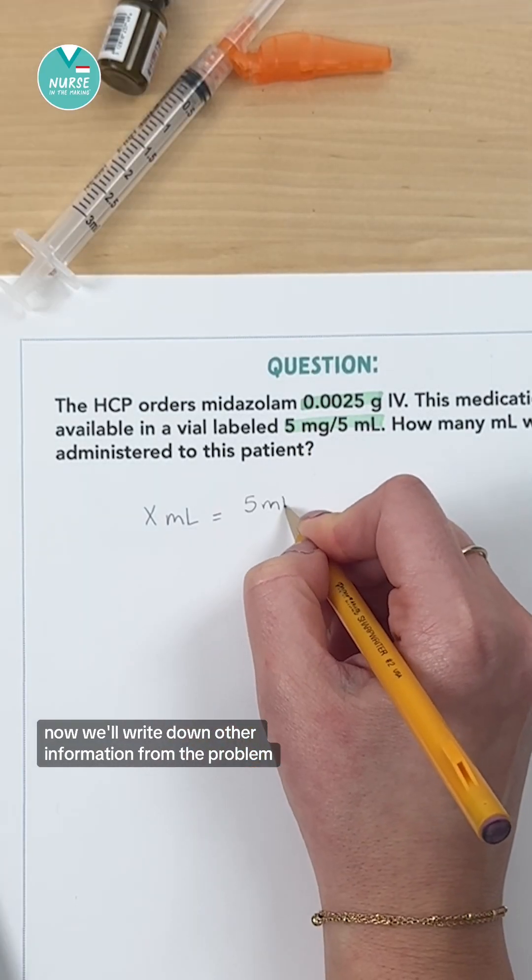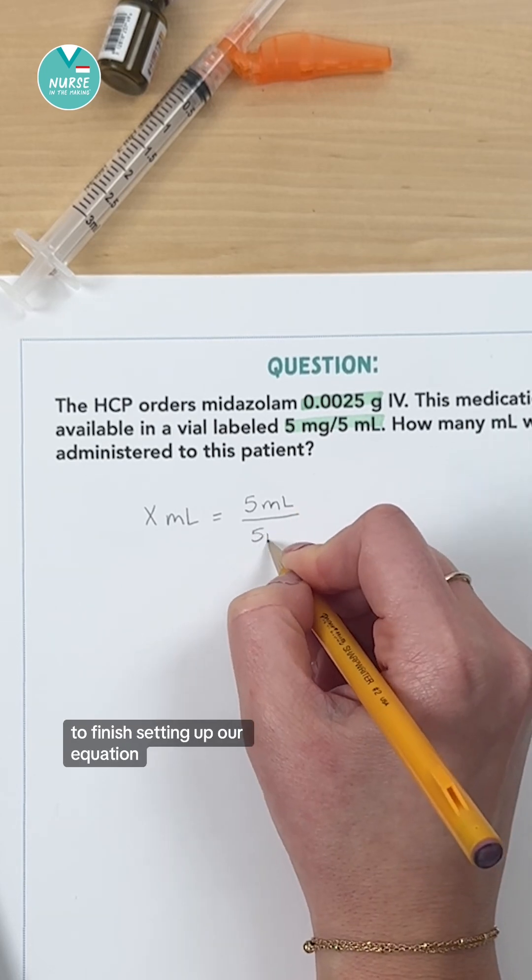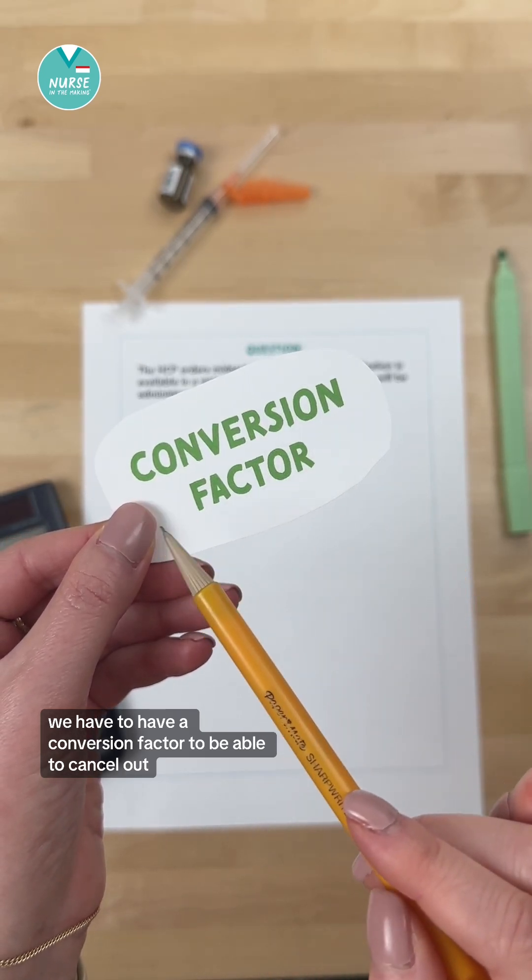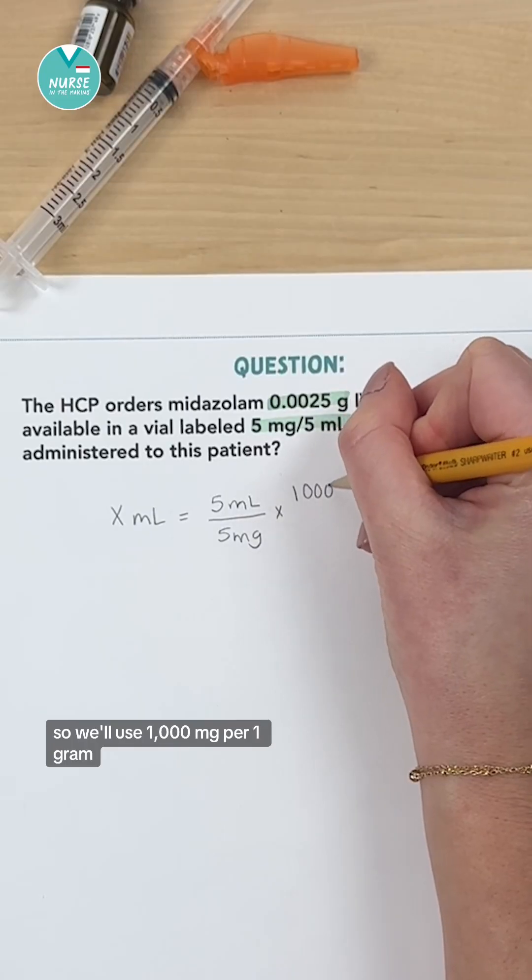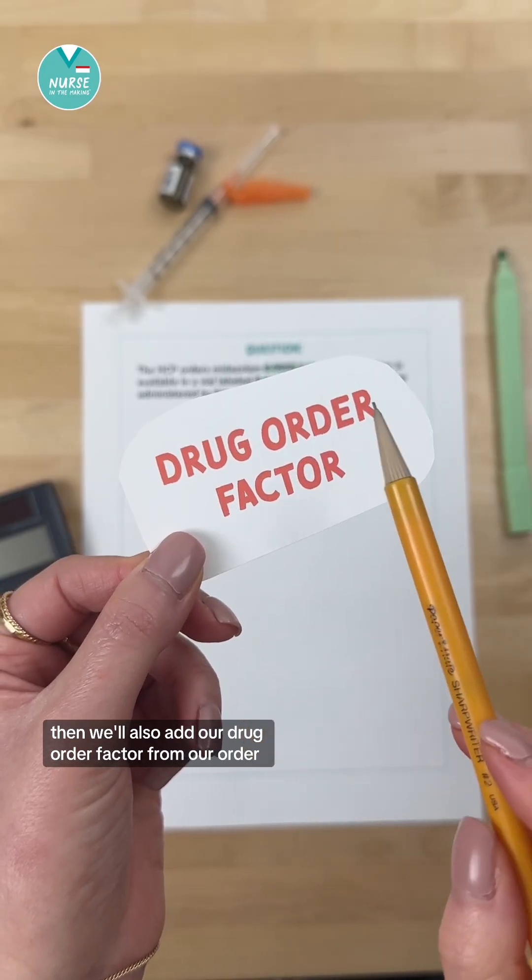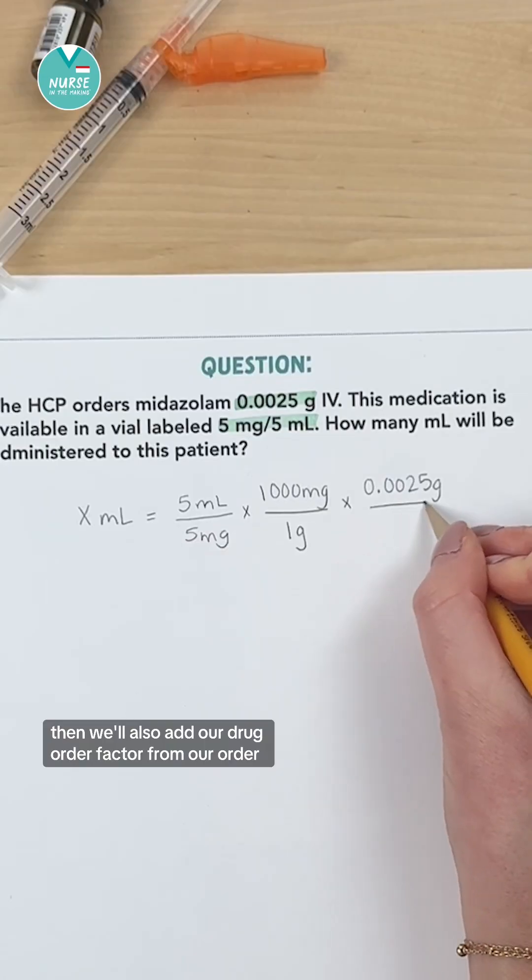Now we'll write down other information from the problem to finish setting up our equation. We have to have a conversion factor to be able to cancel out. So we'll use a thousand milligrams per one gram. Then we'll also add our drug order factor from our order.